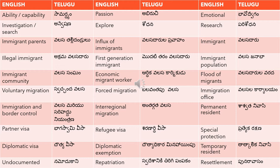Immigrant parents means 'valasa talli dandrulu'. Influx of immigrants means 'valasa talli dandrulu pravahum' — so in a dialogue where there has been a huge influx of immigrants in this quarter, you would say 'valasa talli dandrulu pravahum'. Illegal immigrant means 'akrama valasa talli dandrulu'.